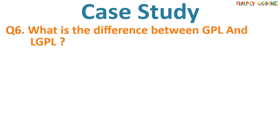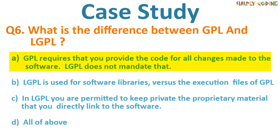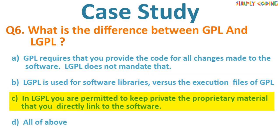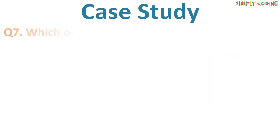What is the difference between GPL and LGPL license? Options: A) GPL requires that you provide the code for all changes made to the software; LGPL does not mandate that. B) LGPL is used for software libraries versus the executable files of GPL. C) In LGPL you are permitted to keep private the proprietary material that you directly link to the software. D) All of the above. The answer is D — all points correctly give the difference between GPL and LGPL. You can use this question to form an answer on GPL, LGPL, or the difference between the two.